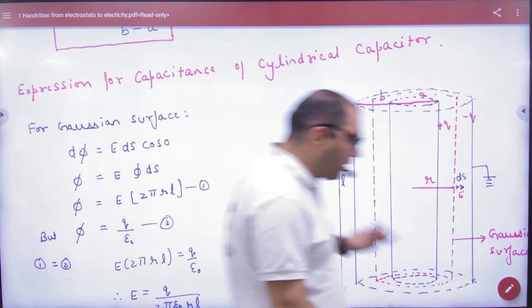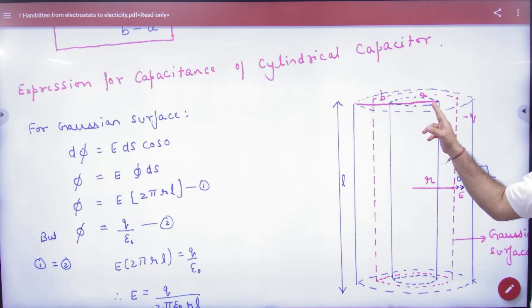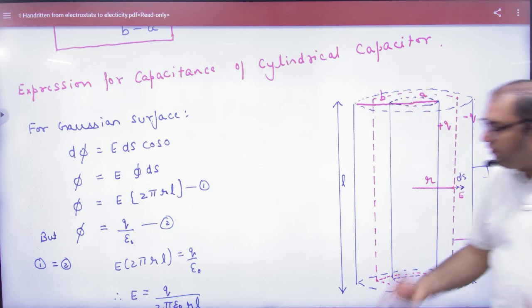Expression for capacitance of a cylindrical capacitor. Given two cylinders, give one charge Q on one, minus Q on the other. A is the inner radius, B is the outer radius.